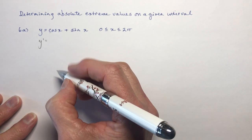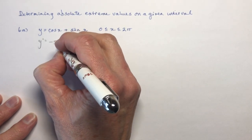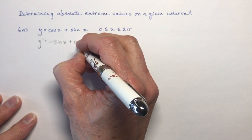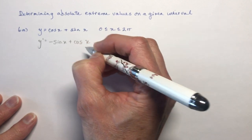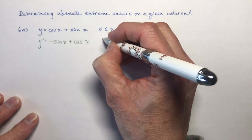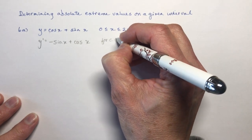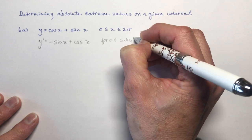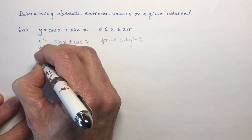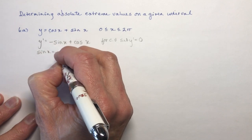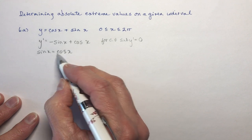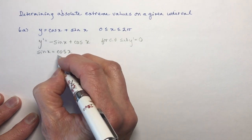y prime — the derivative of cos — remember anything that starts with the letter C goes to a negative derivative, so it's negative sine of x. And sine just goes to cos, so I have negative sine x plus cos x. For critical values, we're going to set y prime equal to zero, and if I set that equal to zero that would mean that sine x has to be equal to cos x.